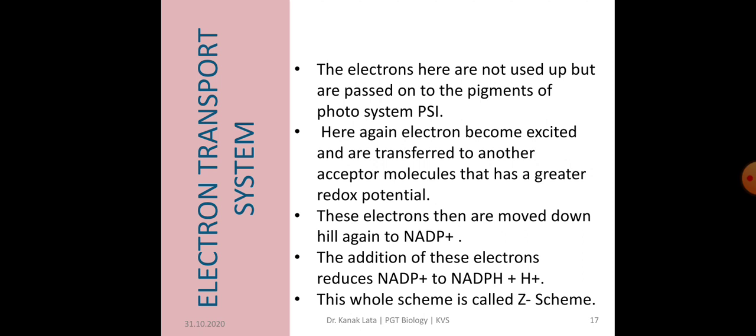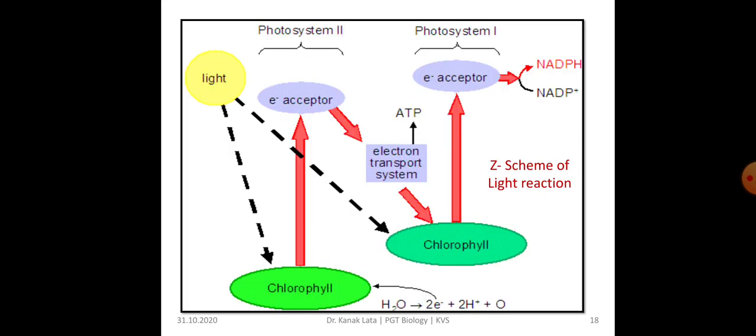So, the whole scheme of transfer of electron is called Z scheme due to its characteristic shape. Here, you can see the flow chart of Z scheme of light reaction. You may observe here the transfer of electrons and the shape of Z scheme.